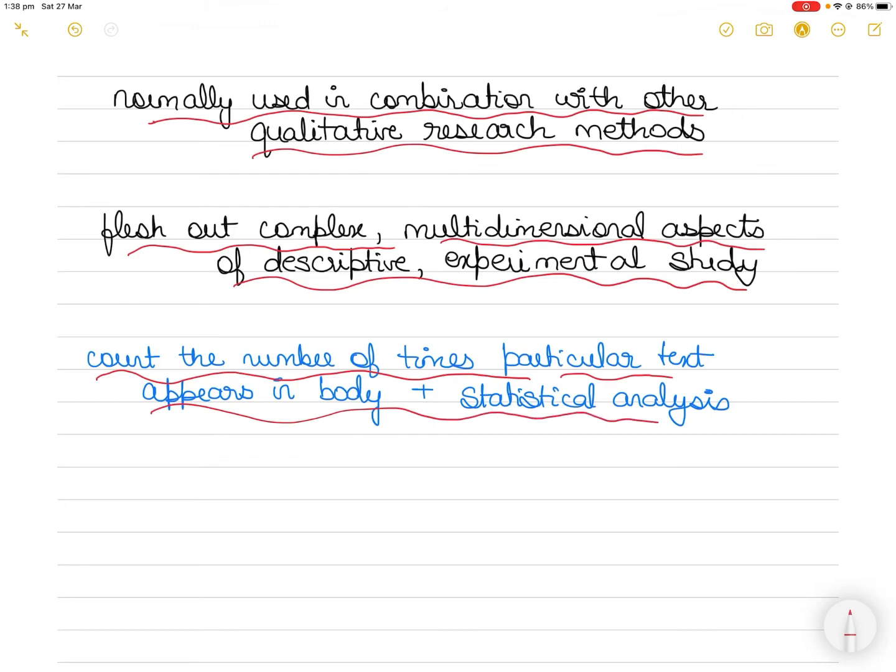Alternatively, a researcher might also conduct one or more statistical analyses on the numbers obtained, for instance comparing the numbers obtained from two or more distinct subsets of the material being analyzed.